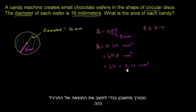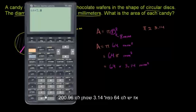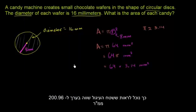And we can get our calculator to figure out what this will be in decimal form. So we have 64 times 3.14 gives us 200.96. So we could say that the area is approximately equal to 200.96 square millimeters.